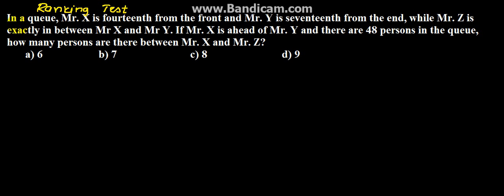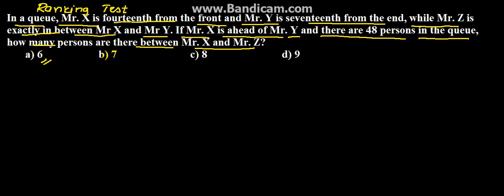Our problem is: in a queue, Mr. X is 14th from the front, Mr. Y is 17th from the end, and Mr. Z is exactly between X and Y. If X is ahead of Mr. Y and there are 48 persons in the queue, how many persons are there between Mr. X and Mr. Z? The options given are 6, 7, 8, and 9.